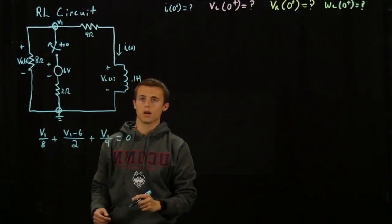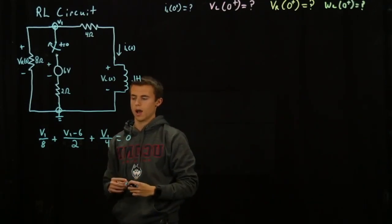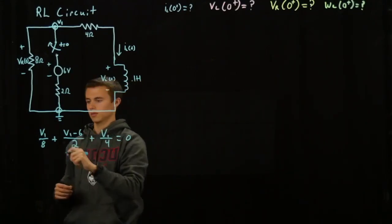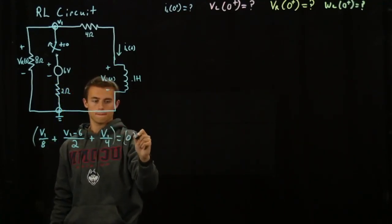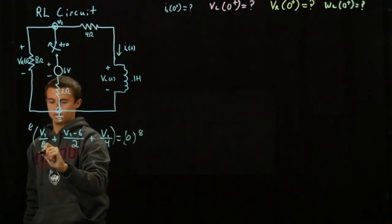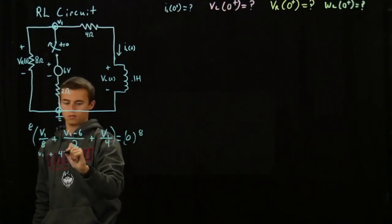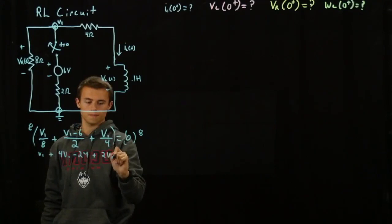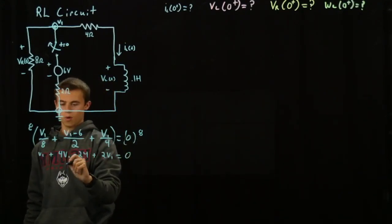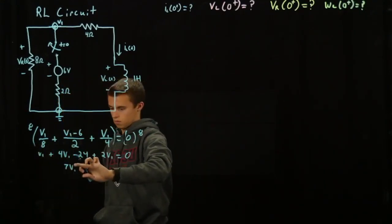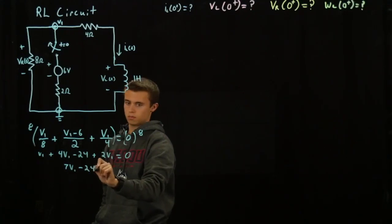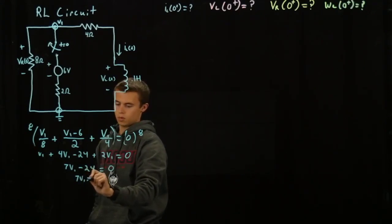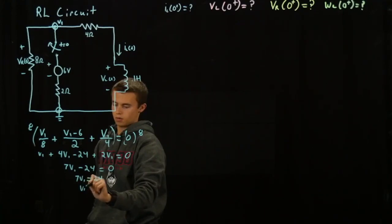There's many ways that you can solve this node voltage. The way I'm going to do it is to get a common denominator, remove it by 8: V1 plus 4V1 minus 24 plus 2V1 equals 0. So you get 7V1 minus 24 equals 0. 7V1 equals 24 and V1 will equal 24 over 7.